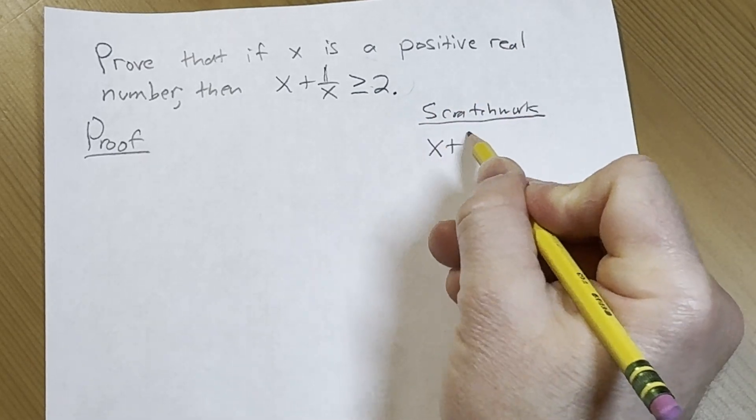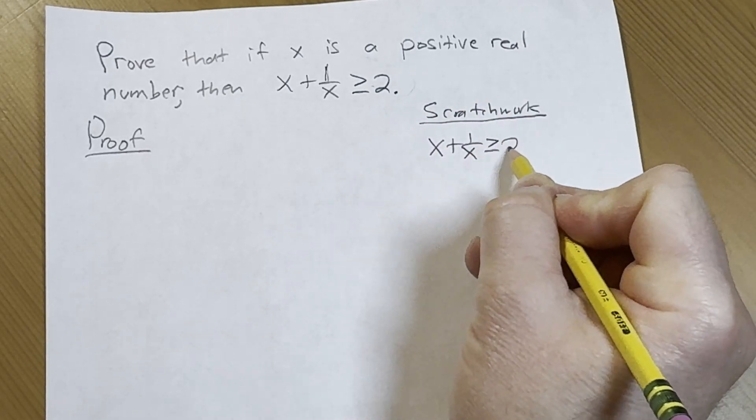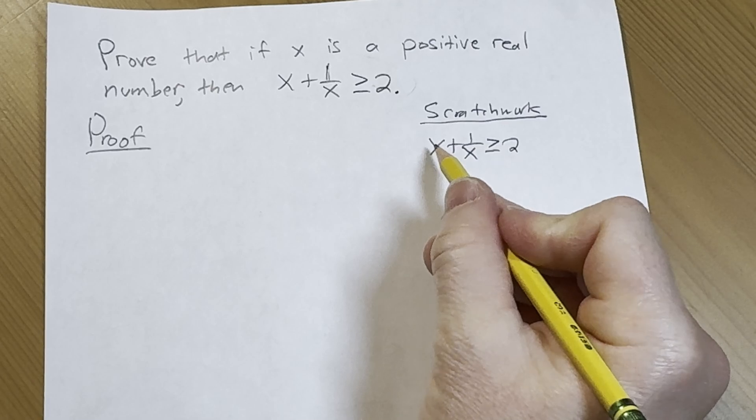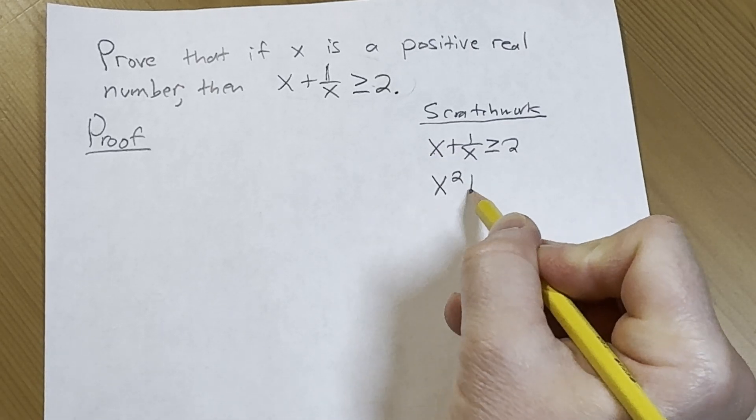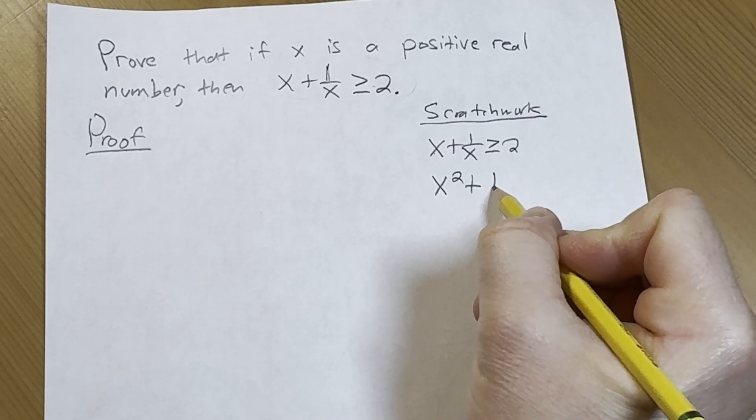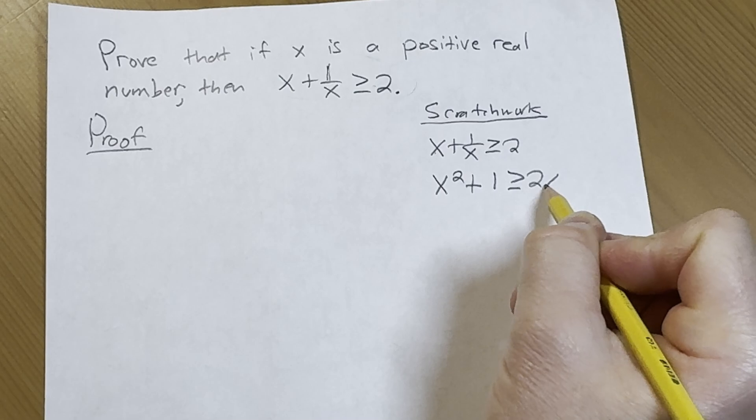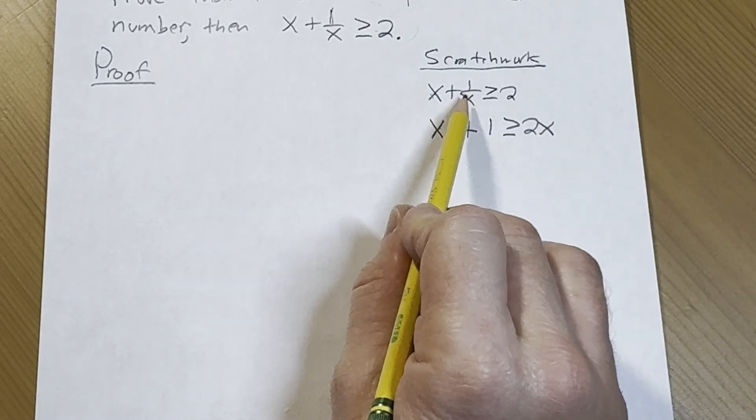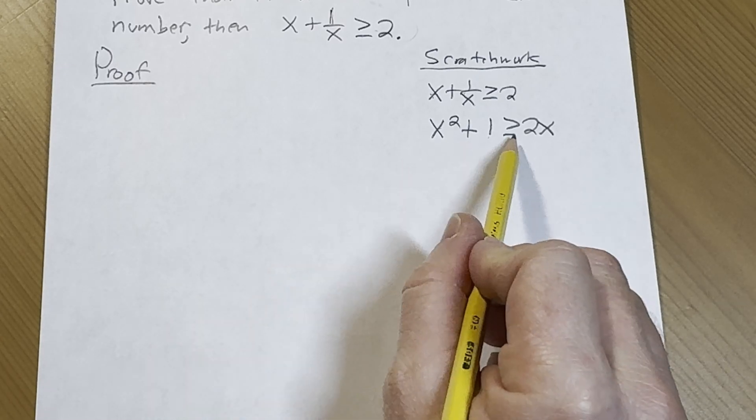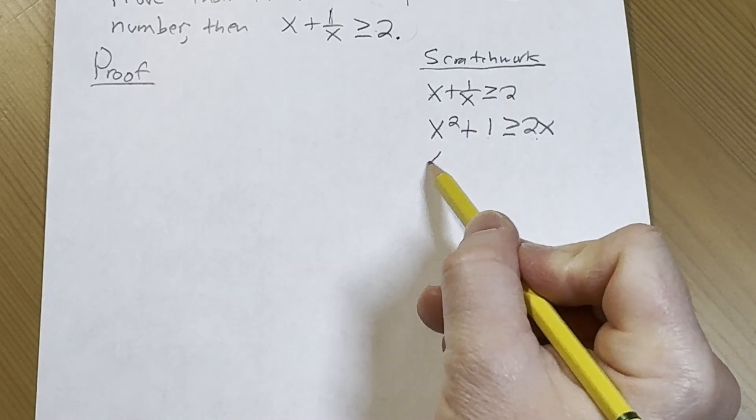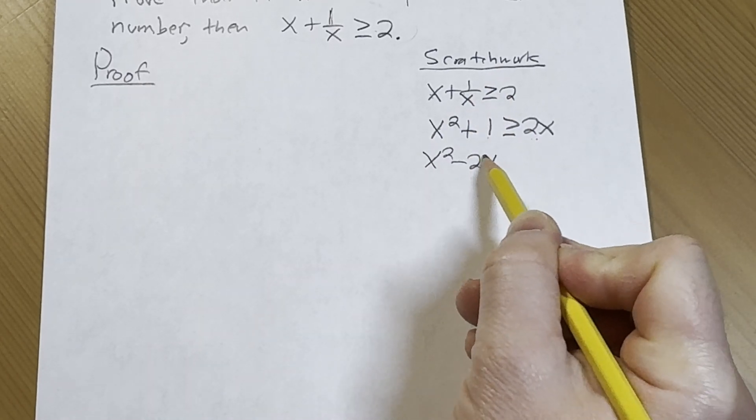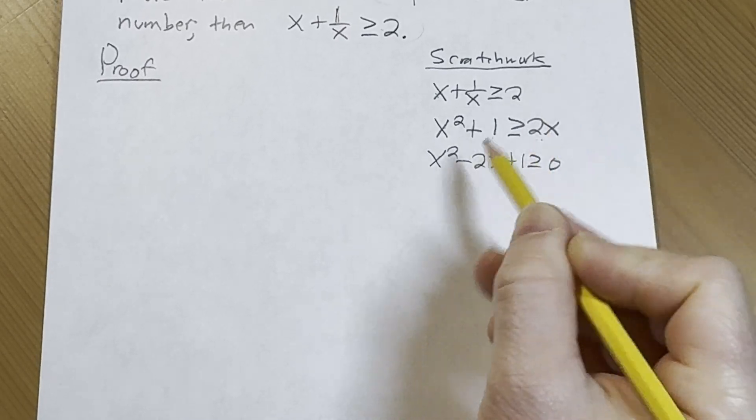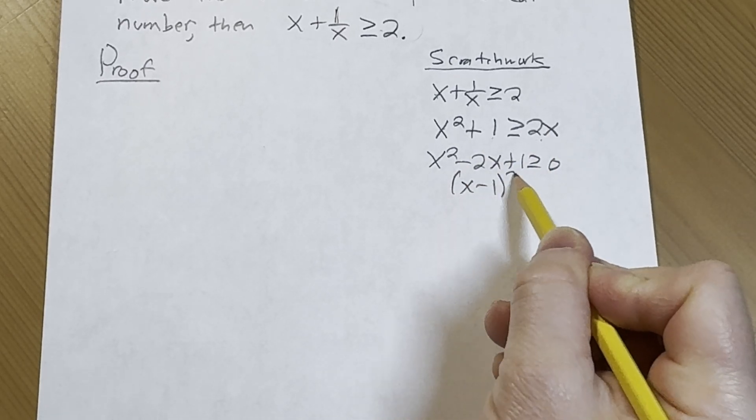This is not the proof. So we have x plus 1 over x greater than or equal to 2. If we multiply by x, that's going to give us x squared plus 1 is greater than or equal to 2x. Multiplying by x, x times x is x squared, x times 1 over x is 1, x times 2 is 2x. Now check this out. If I subtract 2x, I end up with this familiar expression, which is x minus 1 squared greater than or equal to 0. Voila.